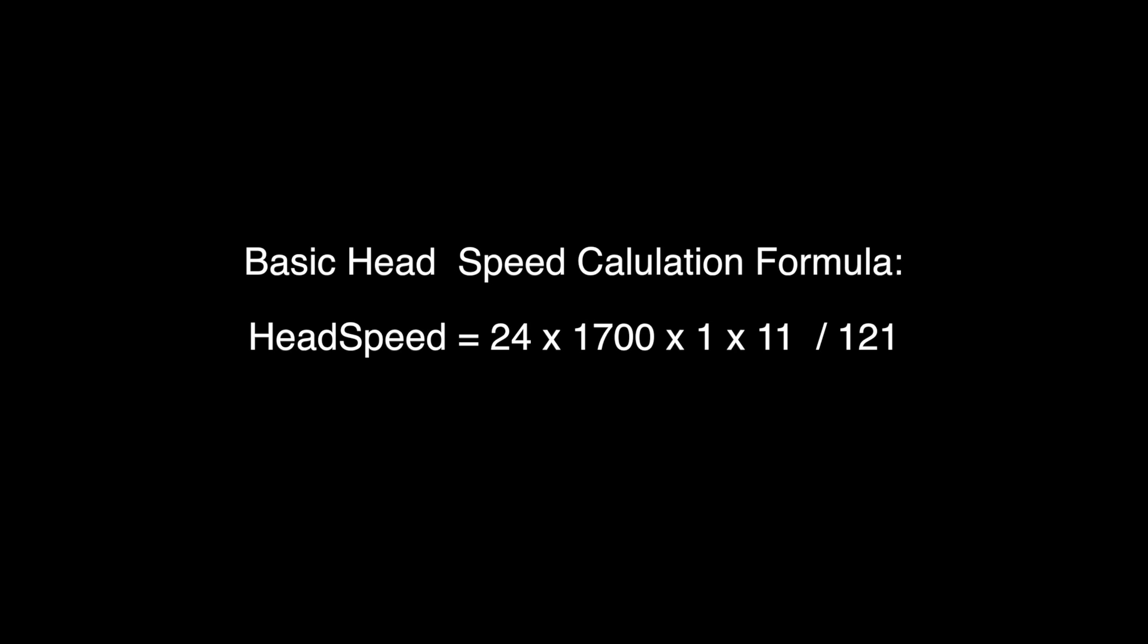Times 1700, which is my motor KV times 1, because remember I'm assuming 100% efficiency. If I was going to do a loaded calculation, I would probably go 0.9 for 90% efficiency. My value is 1 in this.